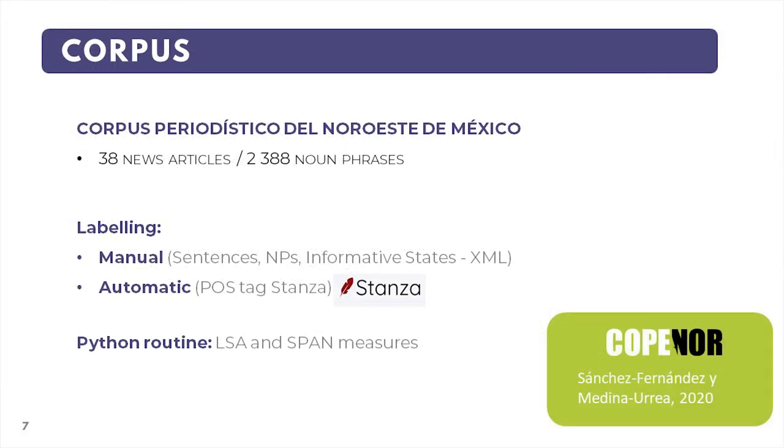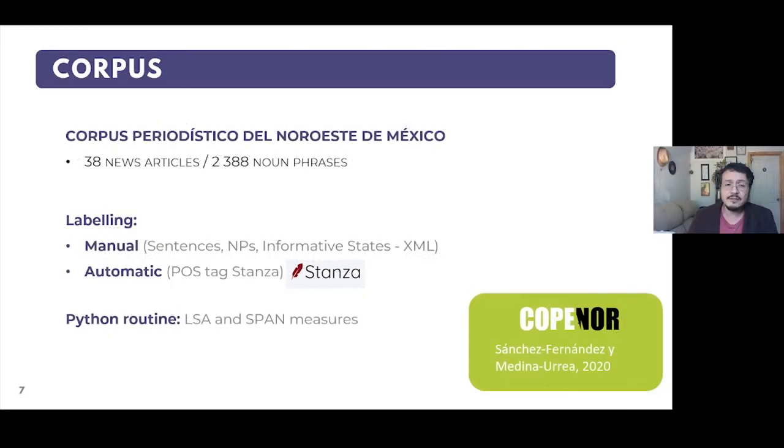For the corpus, 2,388 noun phrases were extracted from a subset of 38 news articles. These were randomly selected from the Corpus Periodístico del Noroeste de México, which consists of a total of 380 news from digital media from the states of Baja California, Baja California Sur, Chihuahua, Durango, Sinaloa, and Sonora from Mexico.